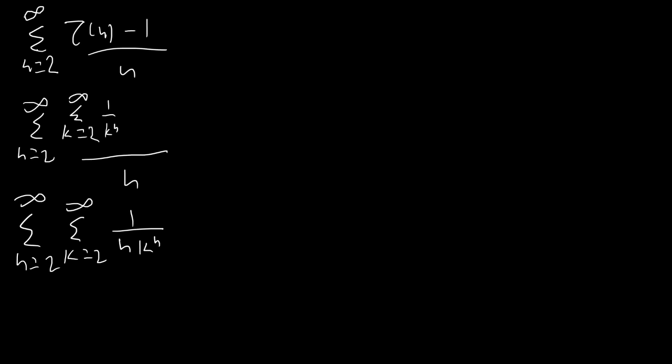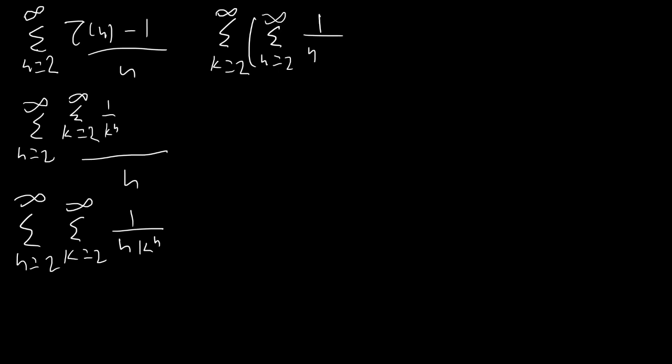What we're able to do here is exchange the order of summations because the sum is going to converge either way. So instead of the sum from n equals 2 to infinity of the sum from k equals 2 to infinity, we're going to end up with the sum from k equals 2 to infinity of the sum from n equals 2 to infinity — and that's important, you'll see why in a moment. So we get the sum from k equals 2 to infinity of the sum from n equals 2 to infinity of 1 over n times 1 over k to the n.